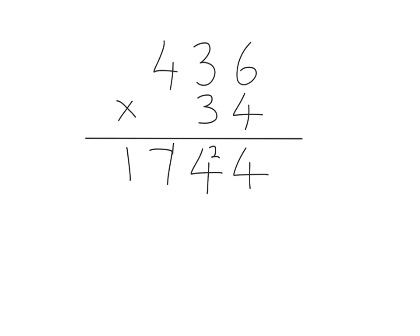So the next thing we're going to do is multiply by the tens column here. So we've got this three, this 30, and we're going to multiply that by 436. So the first thing we need to do, because we're starting in the tens column, is put a placeholder zero in the ones column.